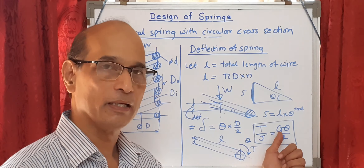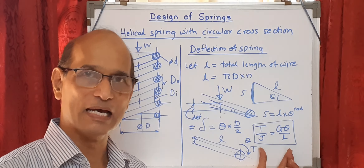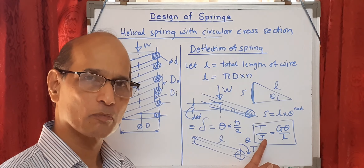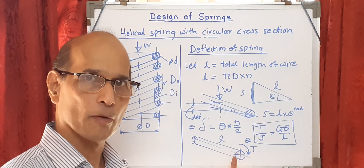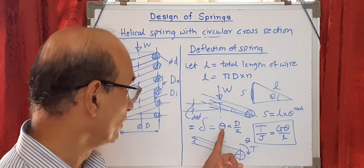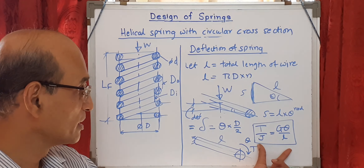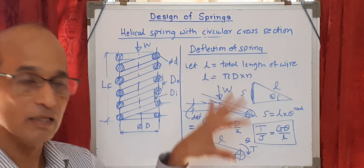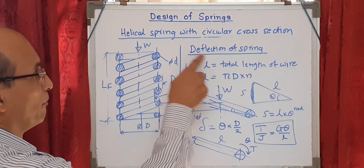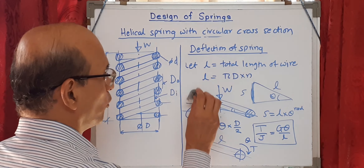When the three ingredients — material property, dimension, and loading — are present, that becomes a design equation. In this case there is a torque, a polar moment of inertia of the cross-section representing the geometry, G is the material property (modulus of rigidity), theta is the angle of twist, and L is the total length. Keeping this in mind, let us find the equation relating deflection to the other parameters.